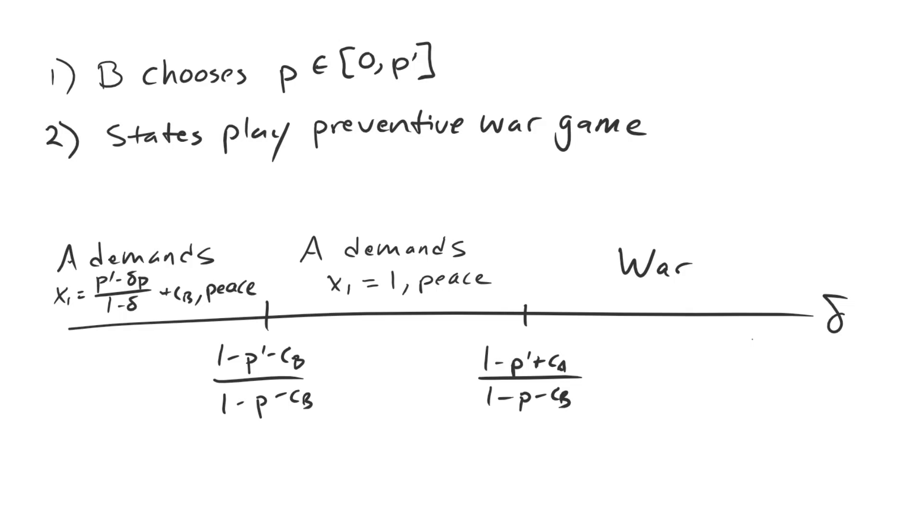I've actually done a lot of the work already on the screen. So the way that this game is going to work is that we're going to have b, the rising state in the previous model, choose a power distribution p for the second stage, that post shift period. And specifically, p will be some value between zero and p prime. Remember that both p and p prime represent a's share of the distribution of power. So p is what's going to be happening in the future, and p prime is the default level right now today. So by choosing p between zero and p prime, b's choice, if it's close to zero, is saying in the future a will have no power and b will have all of it. Whereas if it is choosing something closer and closer to p prime, this is b saying I elect not to have any real shift in the balance of power at all.